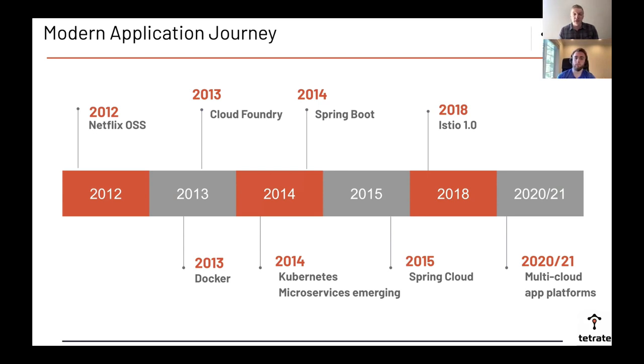Then a few years later, Istio was open-sourced and released to version 1.0 — which is important in the context of cloud-native applications.